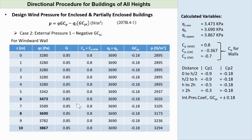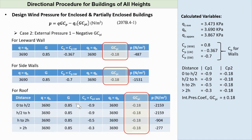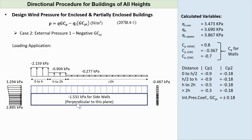Case 2, External Pressure 1 minus Negative GCPI. All variables used are the same as Case 1, except that negative 0.18 will be used for the value of GCPI. Updating the tables and recalculating using negative GCPI, we can get the values of P for each surface. Knowing all the surface pressures, we can also draw the wind action for Case 2.